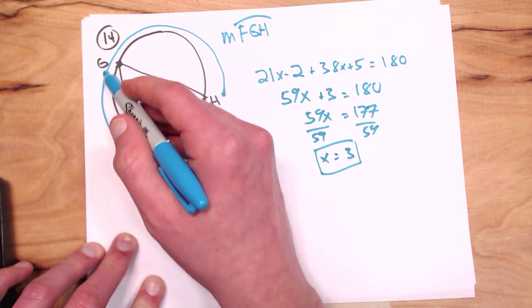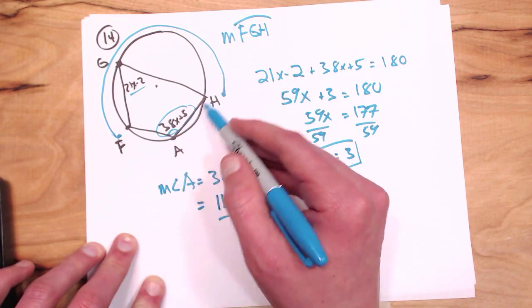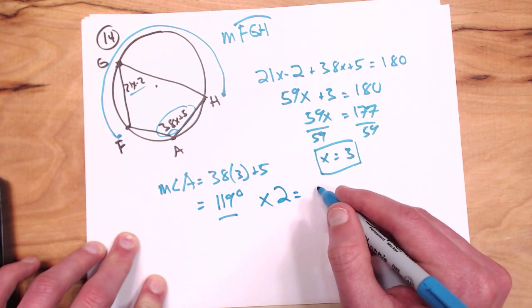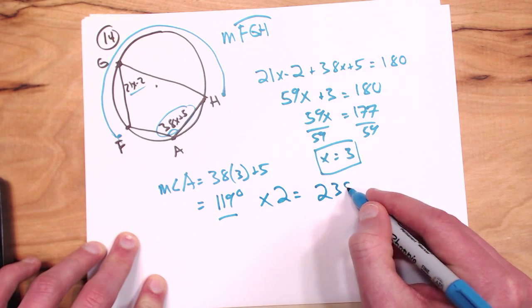And now we know that our arc angle, because it corresponds to this inscribed angle, should just be this times 2, which is 238 degrees.